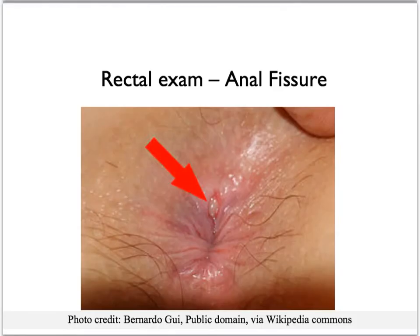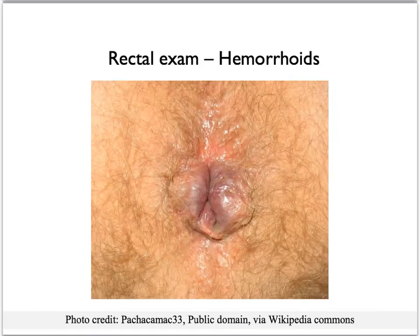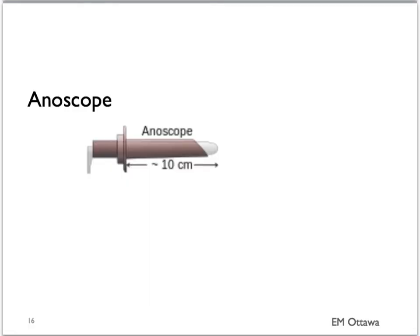There are also other things you can see on the rectal exam. On examining the patient you might be able to see a small anal fissure, which might be the cause of the GI bleeding and pain. Similarly, you might be able to see hemorrhoids on the rectal exam. On the picture here, these are external hemorrhoids. On examination in the rectum you may be able to feel internal hemorrhoids as well. Sometimes an anal scope is used to look for both anal fissures and hemorrhoids if they're not readily seen on inspection.